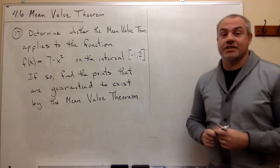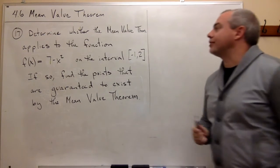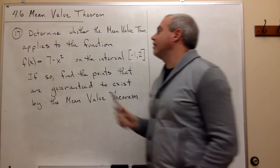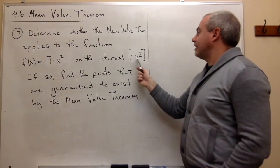Let's take a look at problem number 17. In 17, we'd like to determine whether the mean value theorem applies to the function f of x is equal to 7 minus x squared on the interval negative 1 to 2.